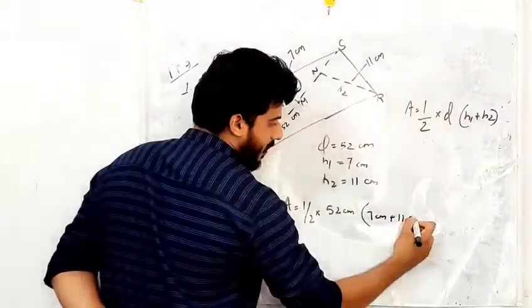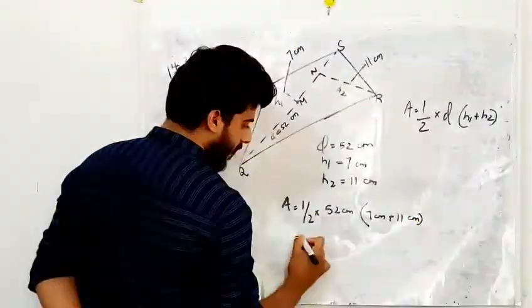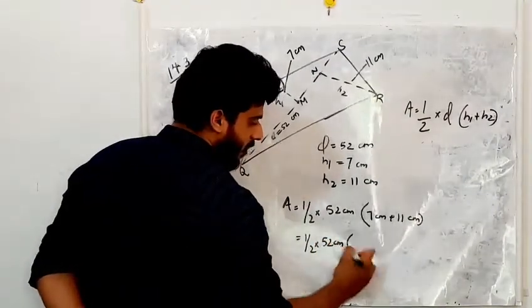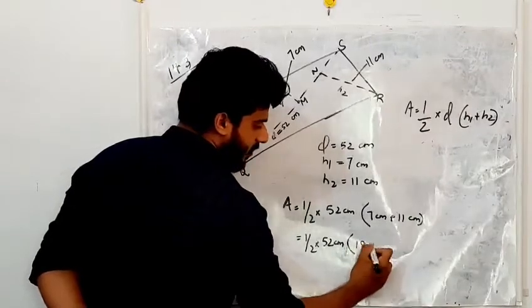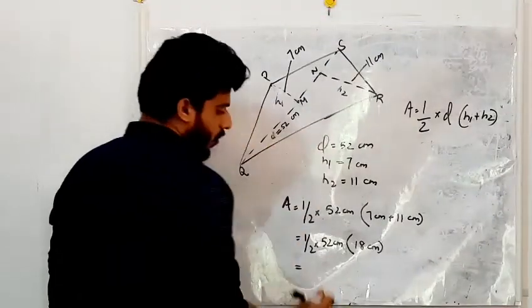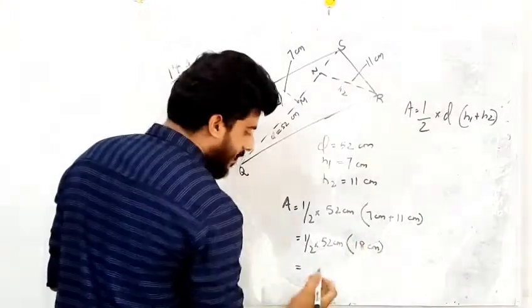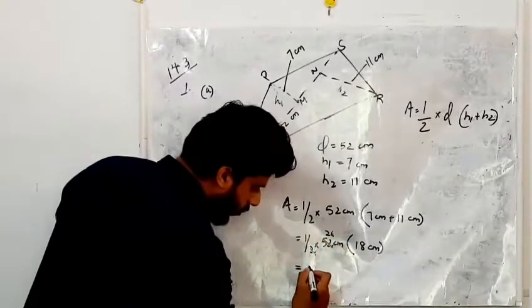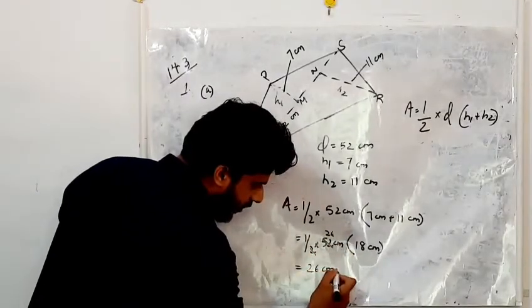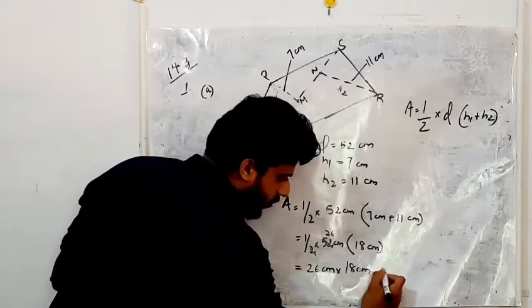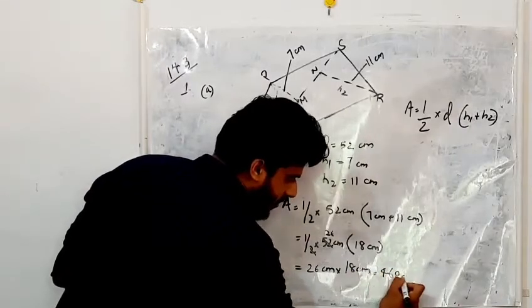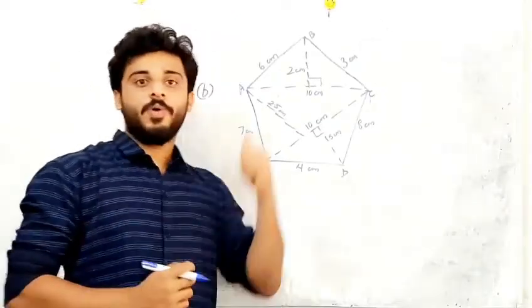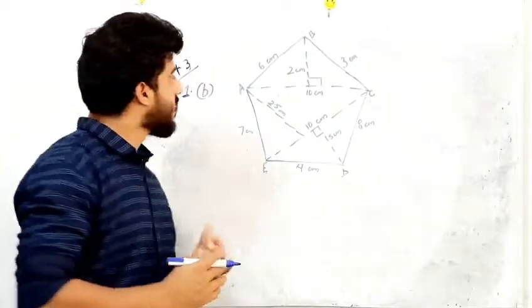So A = ½ × 52 × (7 + 11) = ½ × 52 × 18. Here 2 and 52 cancel, giving 26, so 26 × 18 = 468 cm². That is the area of our quadrilateral.